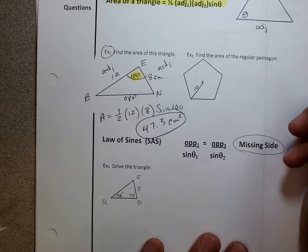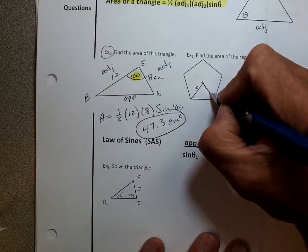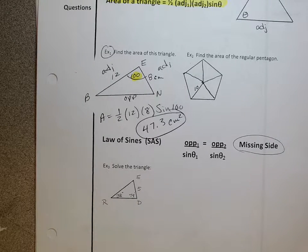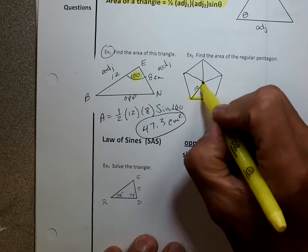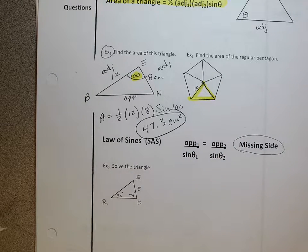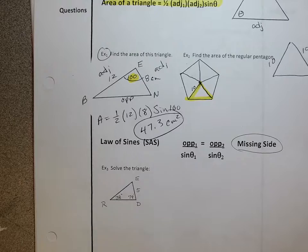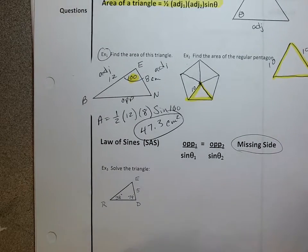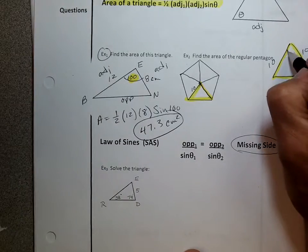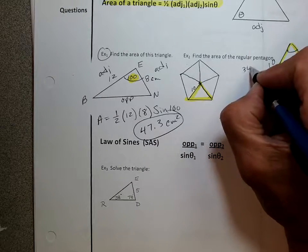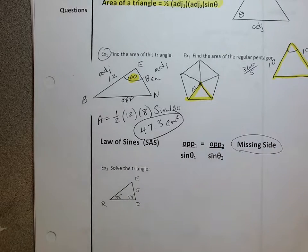Now example two. When I look at the pentagon, what I know is there's really going to be five triangles. So if I can find the area of one triangle, this is 10 and this is 10. I need to know the central angle. Going 360 degrees all the way around, I divide by five central angles and I get 72 degrees.